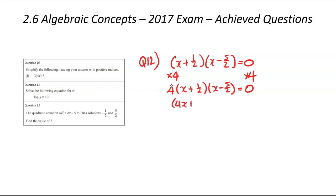That is going to be 4x plus 2, and then x minus 5 over 2. Just a reminder, 5 over 2 is 2.5. If you wanted to change that to a decimal, you can for this question. That's equal to 0. I'm now going to expand this.